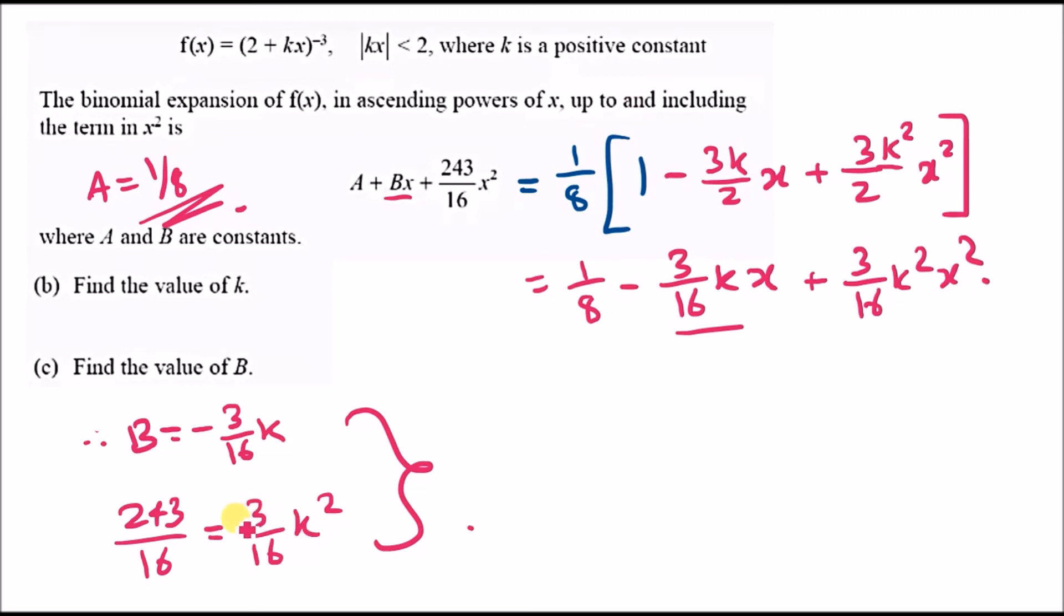Making k^2 the subject, we divide 243/16 by 3/16, which gives us 81. So k^2 equals 81, meaning k equals plus or minus 9. But k is a positive constant, so k equals 9.